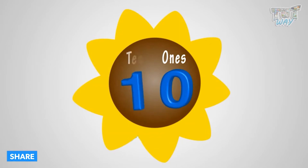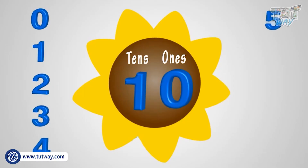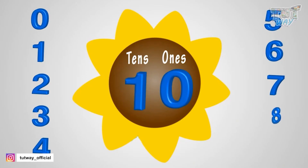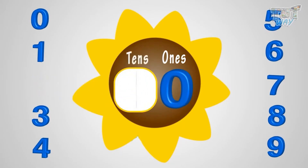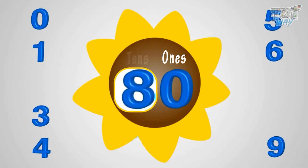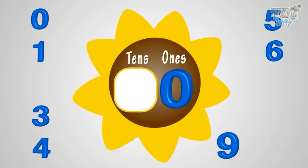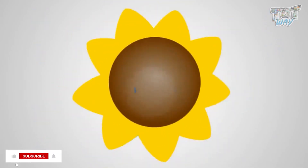The digit at the second place from the right is in the tens place in any number. Zero, one, two, three, four, five, six, seven, eight, nine can be there in tens place. Here one is in tens place. Here two is in tens place. Here seven is in tens place. Here eight is in tens place. Here nine is in tens place.